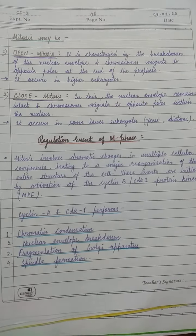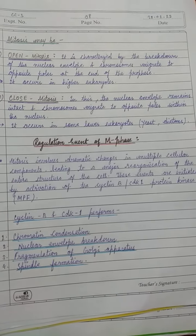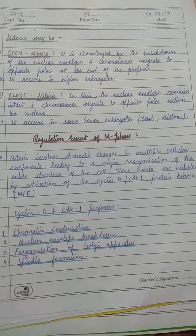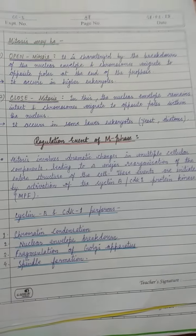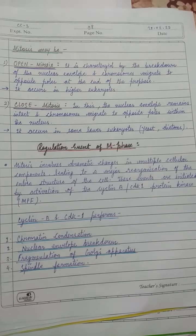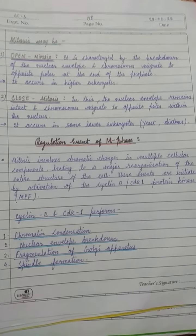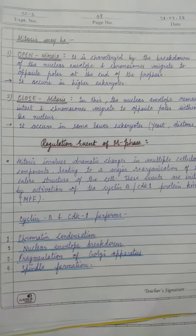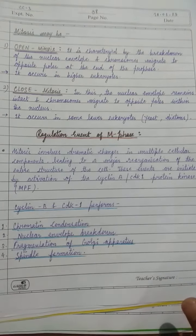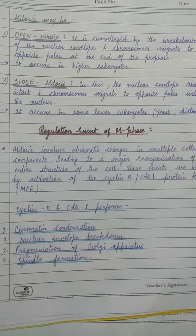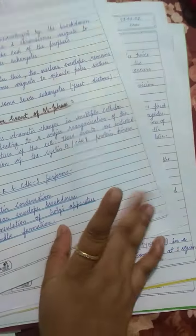The regulation of M phase: mitosis involves dramatic changes in multiple cellular components, leading to a major reorganization of the entire cell structure. These events are initiated by activation of cyclin B, cyclin-dependent kinase, MPF (mitosis promoting factor). Key regulated events include chromatin condensation, nuclear envelope breakdown, fragmentation of the Golgi apparatus, and spindle fiber formation.